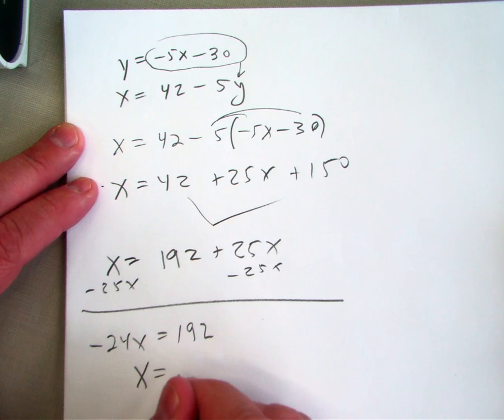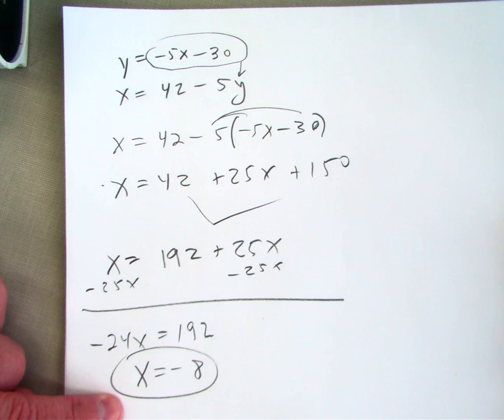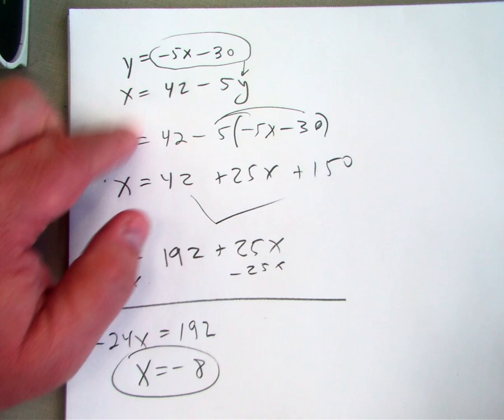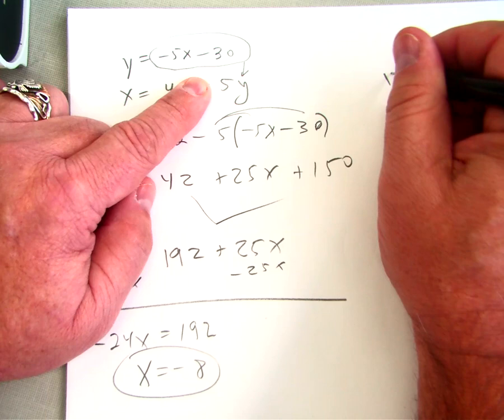I know what x equals. It equals negative 8. That means up here x equals negative 8. So I plug this into either equation, and I have this if I put it in the top one.